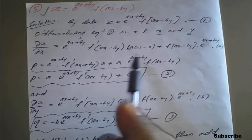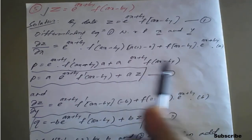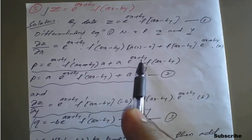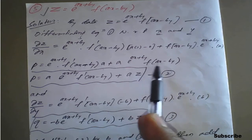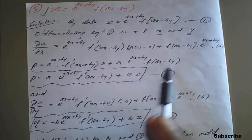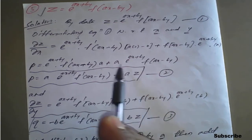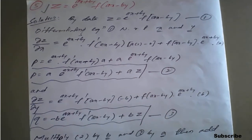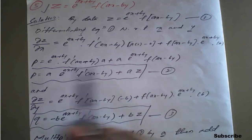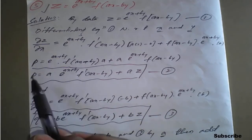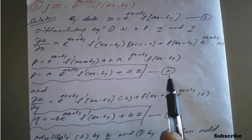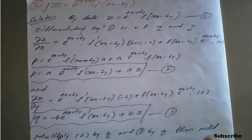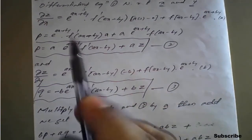According to equation number one, e raised to (ax + by) into f of (ax minus by) is nothing but z. So we replace that part with z, giving dou z by dou x equals a times f dash term plus a times z. Denoting dou z by dou x as p, call this equation number two.